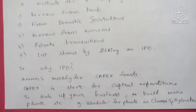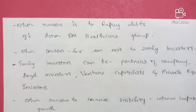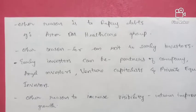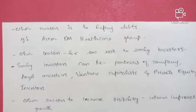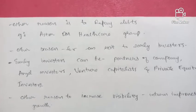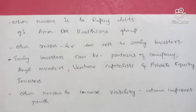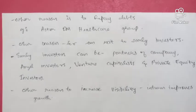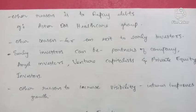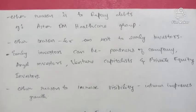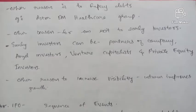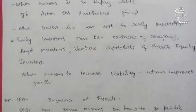For example, Dollar listed their shares before opening plants in Hyderabad and Chennai. Other reasons a company goes public include repaying debts — for example, Astridm Healthcare Group had almost 1,600 crores in debt and went public to raise funds to repay it. Companies also go public to provide an exit to early investors such as angel investors, venture capitalists, and private equity investors.